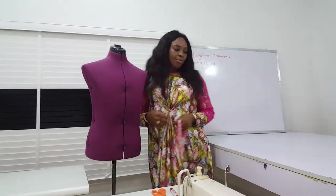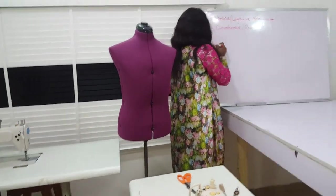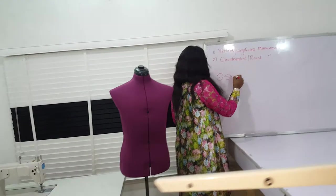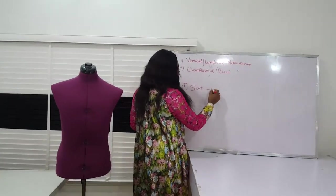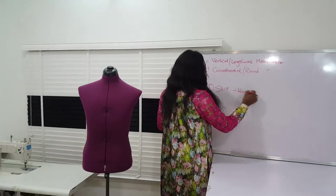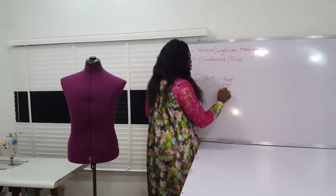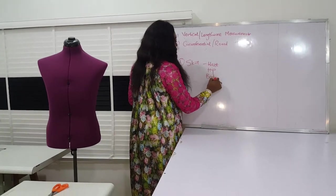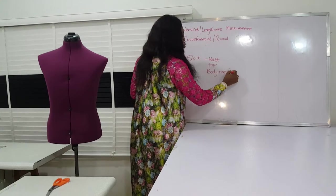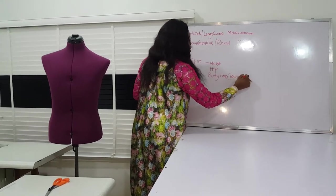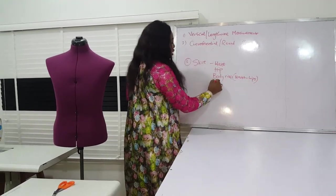For various garments, like making a skirt, the measurements we need include the waist measurement, the hip, the body rise — which is the distance from the waist to the hip — and the length of the skirt. The length of the skirt is your desired length: it can be a short skirt, a knee length, a long skirt, whatever your preference.